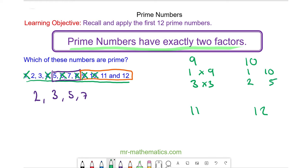For eleven, we've got one and eleven, so eleven is prime. For question twelve, we have one and twelve, two and six, three and four, which is six factors, so twelve is not prime.